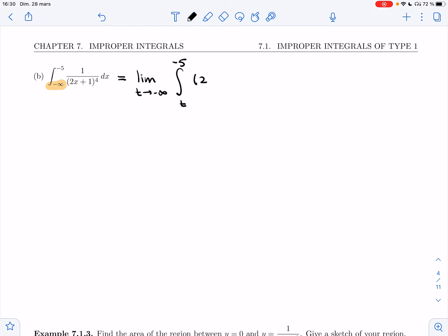All right, I have 2x plus 1 to the minus 4 dx. So the limit will stay up front until we're done integrating, and then we'll use it. So now my job is to look at this integral and to evaluate it.